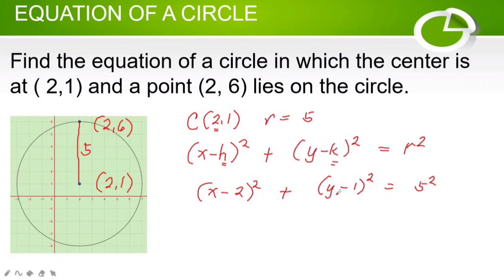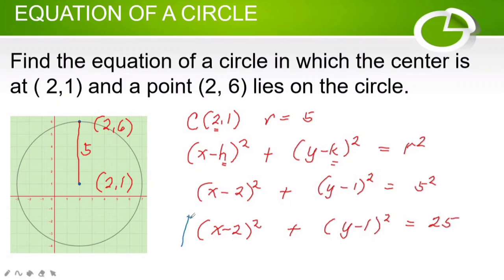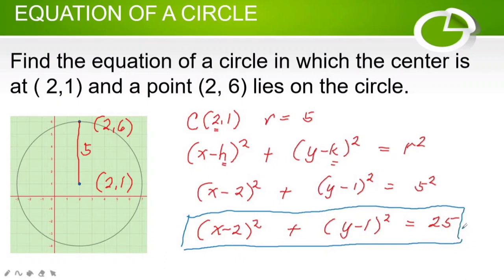Using the standard form of the equation of the circle with h = 2, k = 1, and r = 5, we replace the values and simplify. This gives us (x − 2) squared plus (y − 1) squared is equal to 25. This is the equation of the circle with center at (2, 1) and point (2, 6) lying on the circle.